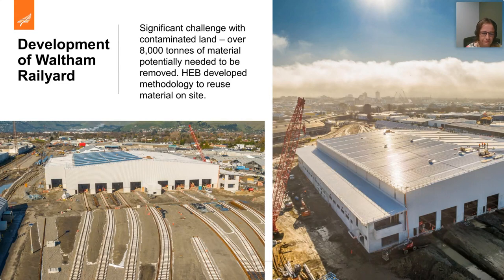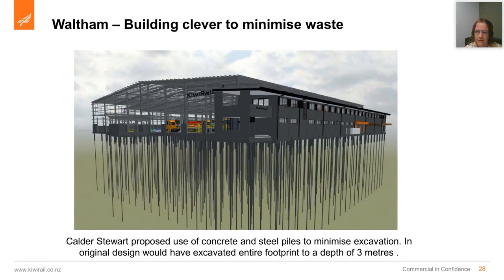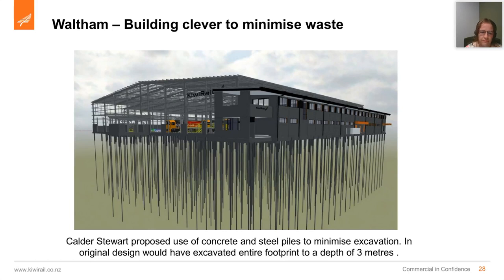The other picture shows solar panels installed on top of Waltham, now providing most of the power to that site. Further on Waltham — another really good outcome. We had a proposal from the contractor Calder Stewart during procurement. Our initial design was to excavate the entire footprint to a depth of three metres, which would have been a huge volume of material. They proposed a more efficient piling solution — putting in lots of steel piles going down to about 26 metres — achieving the same stability goal without so much excavation. That created quite significant cost savings.